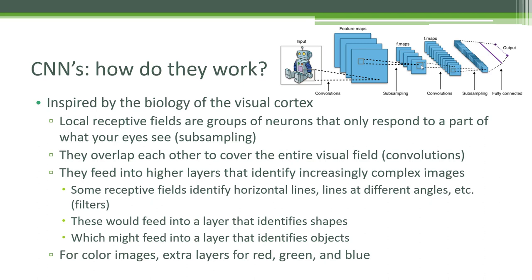Inside your brain you have many layers — it is a deep neural network that identifies various complexities of features. The first layer might identify horizontal lines, lines at different angles, or specific kinds of edges; we call these filters. That feeds into a layer above that assembles those lines into shapes, and maybe a layer above that recognizes objects based on patterns of shapes. For color images, we multiply everything by three because you have specialized cells in your retina for detecting red, green, and blue light, each processed individually. That's all a CNN is — taking source data, breaking it into chunks called convolutions, and assembling patterns at increasingly higher complexities.